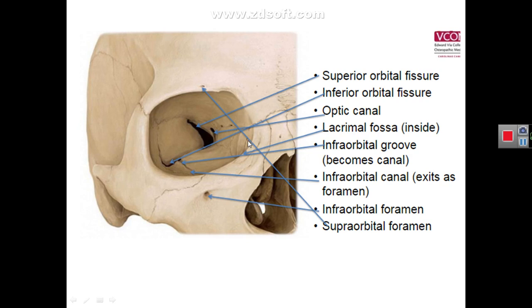The base is formed by the orbital margins. The upper margin is formed by the orbital plate of the frontal bone. The lateral margin is formed by the zygomatic process of the frontal bone and the frontal process of the zygomatic bone. The lower margin is formed by the zygomatic bone and by the maxilla. The medial border is formed by the maxillary process of the frontal bone and the frontal process of the maxilla.